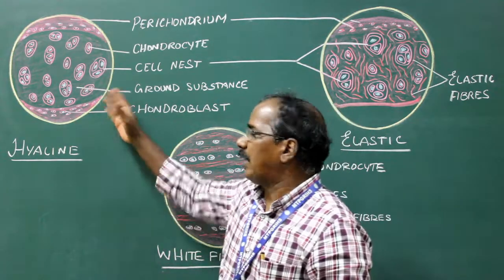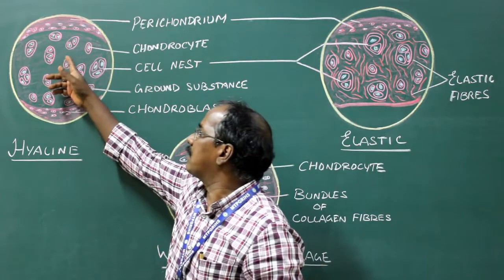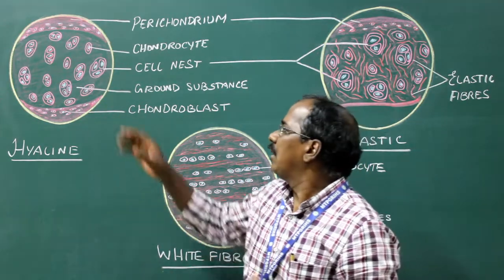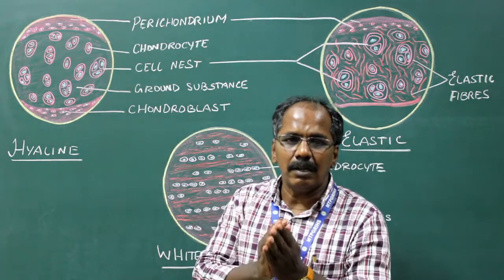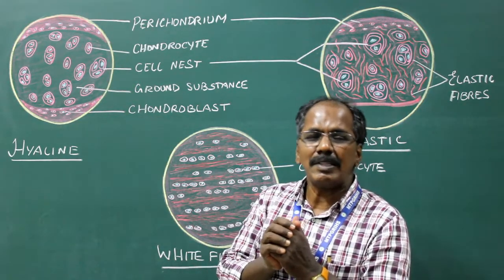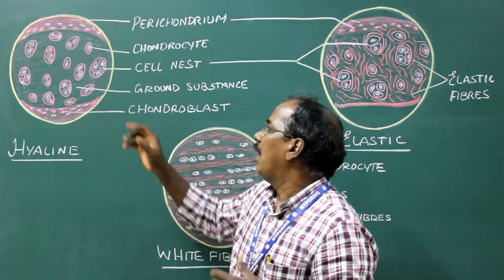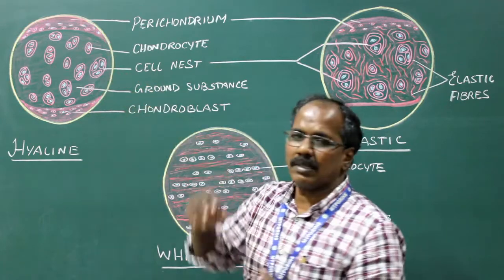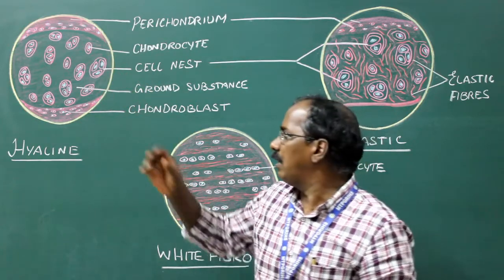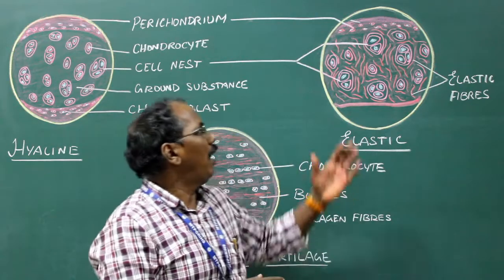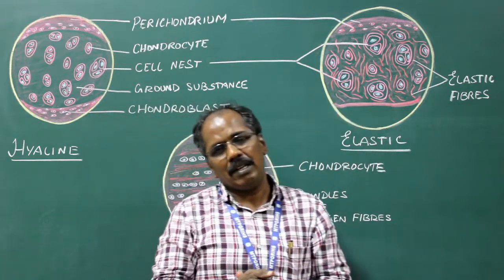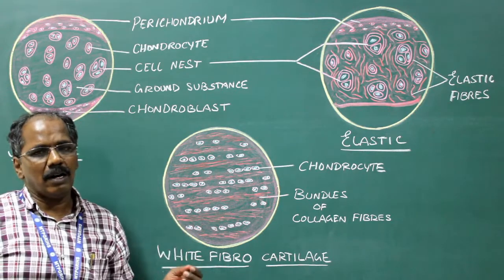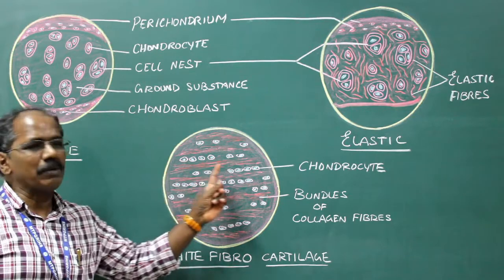The cells of cartilage are present in a space known as lacuna. The cells are accumulated in a group of two to six cells, and presence of two to six cells in a lacunae is known as cell nest. The presence of cell nest is in hyaline cartilage and elastic cartilage. The cells of the white fibrocartilage are arranged in a chain or in a row form.